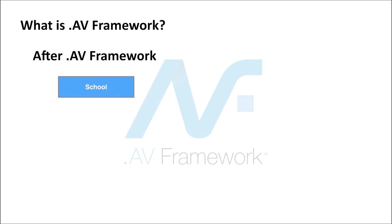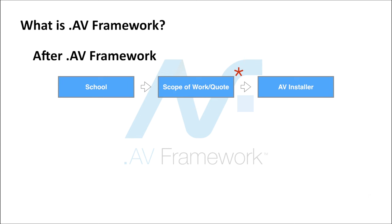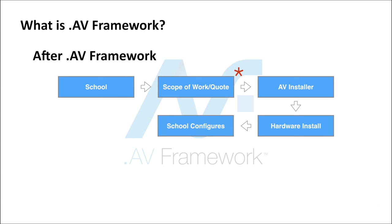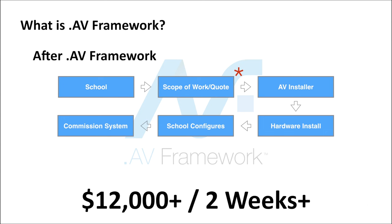After .av framework, the school has more control over how these systems are deployed. They can come up with the scope of work and generally quote how much the space would cost. The space would have to conform to what .av framework is able to accommodate, so if you had customized requirements, .av framework wouldn't be a solution for you. But for a relatively simple room, it does fit. We could go to the AV installer, and they could either deploy the hardware or hand it over to a mid-level AV technician to install. Because the software — .av framework — is already running on the hardware, no software needs to be installed. The school simply configures the hardware as preferred and the system is commissioned. This room now costs about twelve thousand dollars and took about two weeks to deploy.